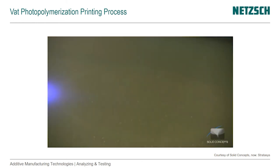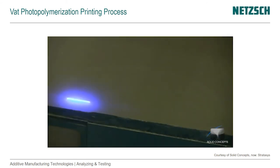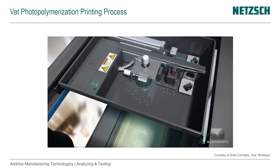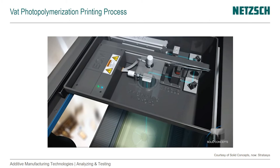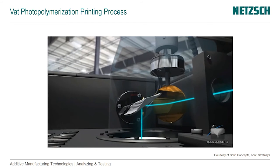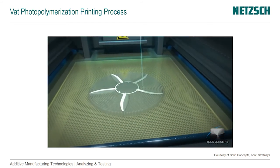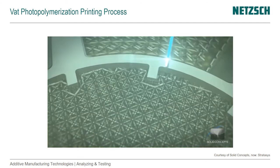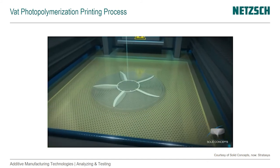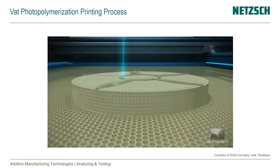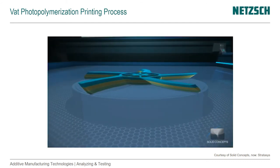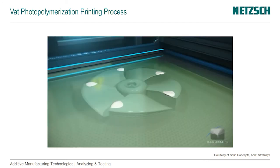The machine begins to build the part one layer at a time. Each layer is constructed from an ultraviolet laser that is directed by X and Y scanning mirrors. As the laser traces the cross-section on the surface of the resin, the liquid material is hardened on contact. Once a layer is complete, the build platform is indexed down to make room for the next layer. A re-coater blade moves across the surface, ensuring a thin coat of fresh liquid resin is evenly spread over the object. The laser continues to trace and form each layer atop the previous layer, building from the bottom up.